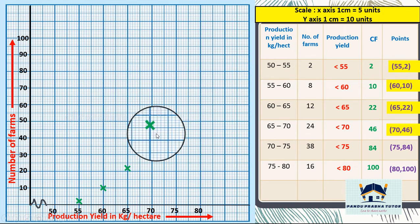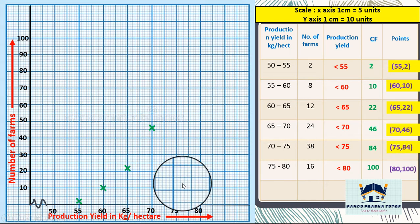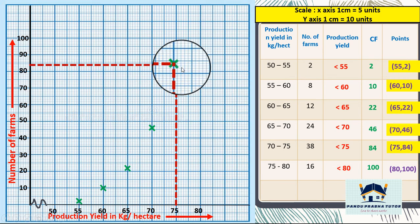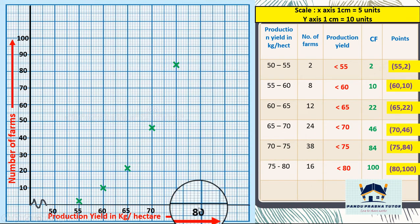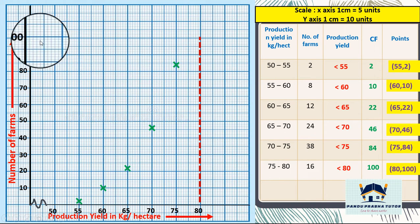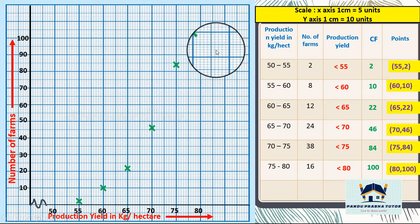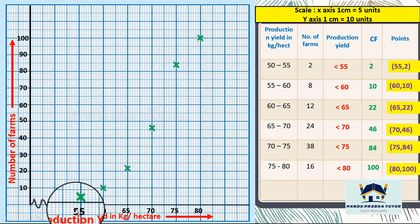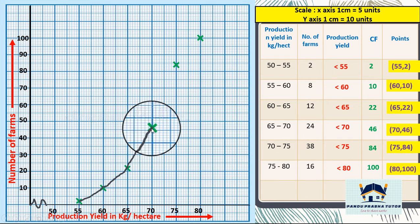Next point we have 75 comma 84. Last point is 80 comma 100. In x-axis 80, from y-axis 100. This one is 80 comma 100.